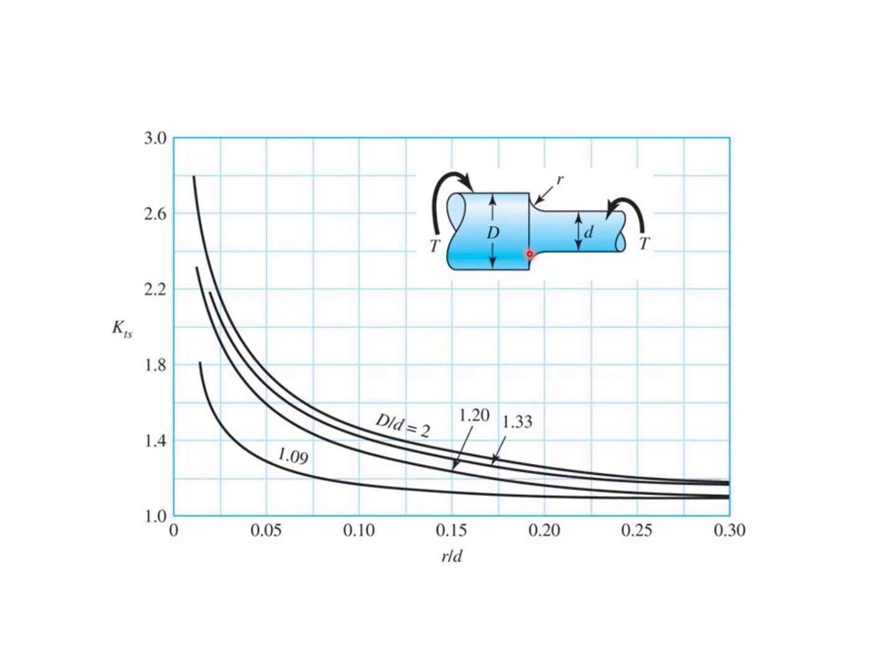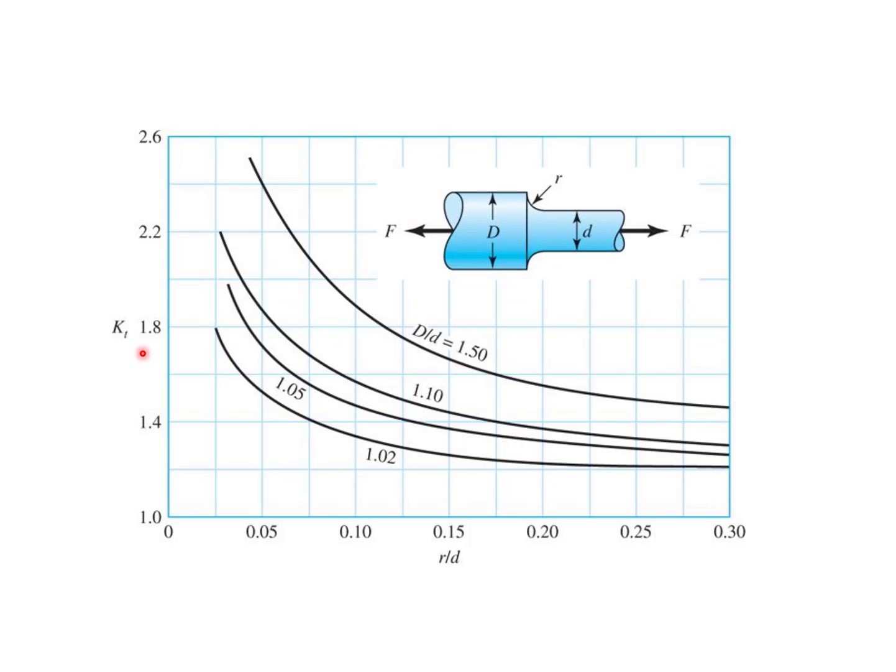In torsion, we have different stress concentration factors. So we have to find the elastic stress concentration factors in torsion, and we have to do the same thing for axial loading. So it becomes a long and complicated process, but the idea behind it is fairly straightforward.